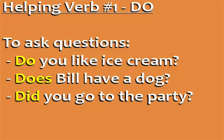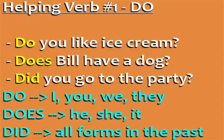Does Bill have a dog? Did you go to the party? Use 'do' in the present tense with I, you, we, and they. Use 'does' in the present tense with he, she, and it. And use 'did' with all forms in the past.